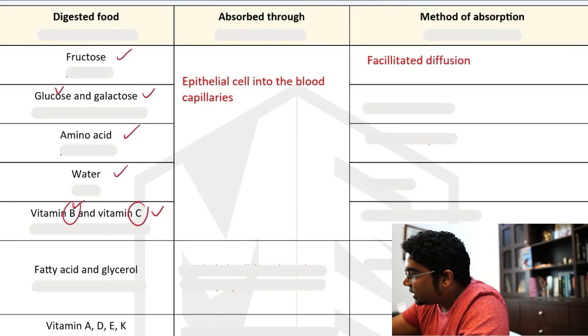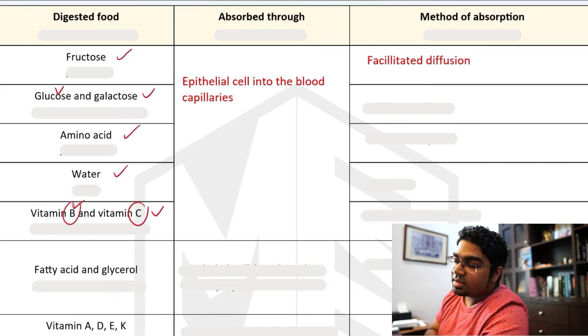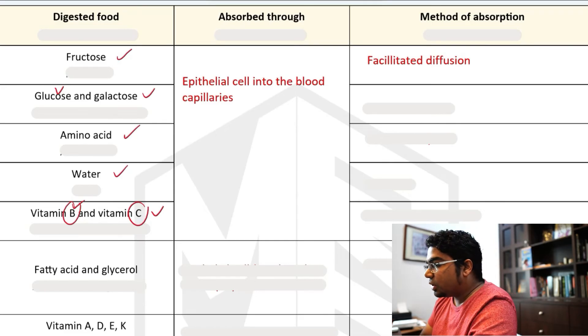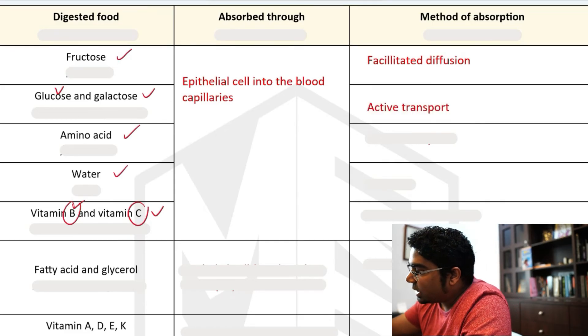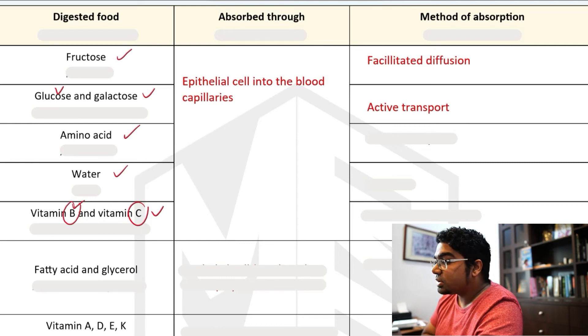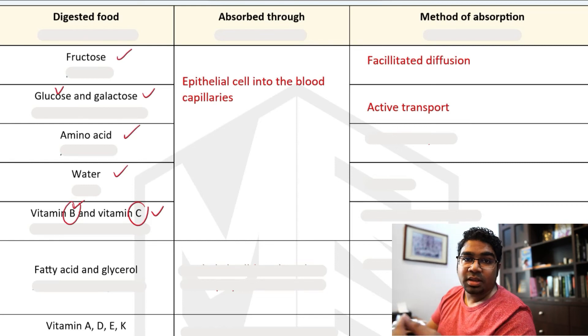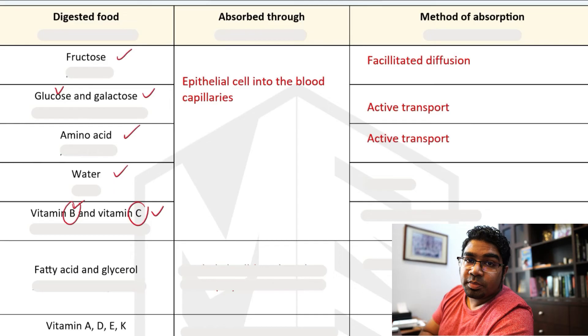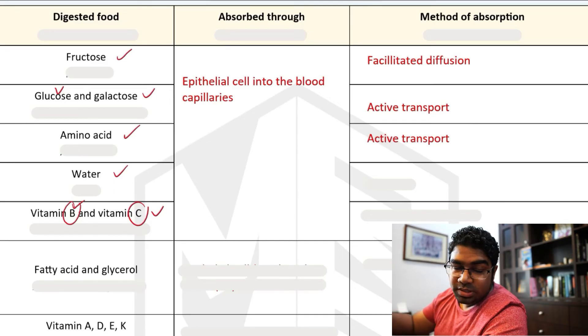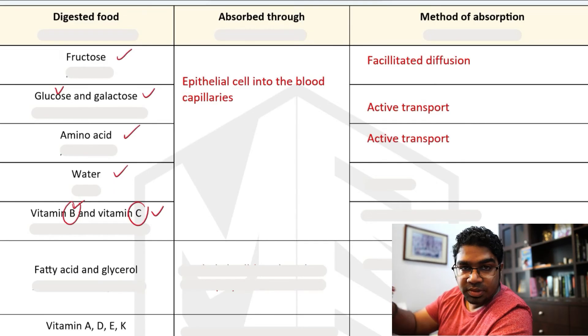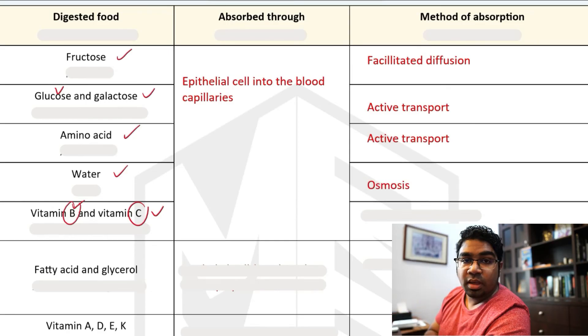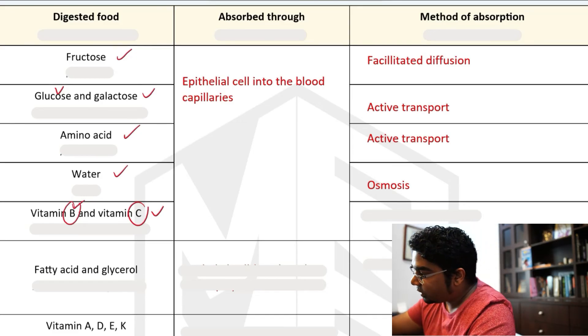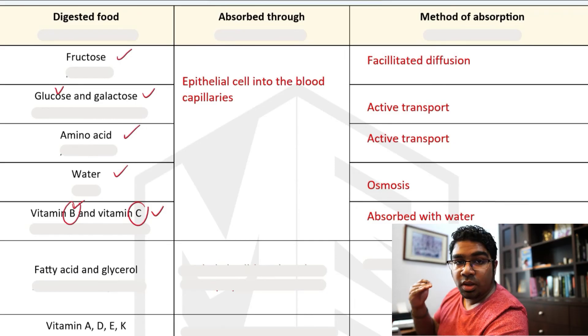And so what is the method for each of these following nutrients? For fructose, the method is facilitated diffusion. It is still down the concentration gradient. However, it needs a channel protein. And then for glucose and galactose, it is by active transport. This is because glucose and galactose concentration is higher in the blood than it is in the ileum. And then we have amino acid is by active transport as well for the same reasons. Water will just pass through by simple diffusion and that is through osmosis. And vitamin B and C will follow along with water. It is dissolved in water. So it just follows along. It tags along. It is absorbed together with water.